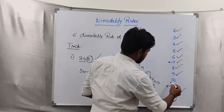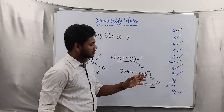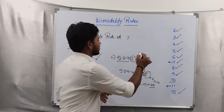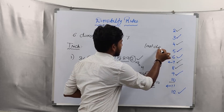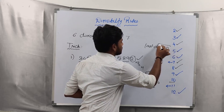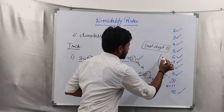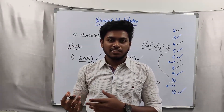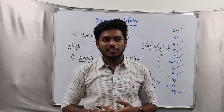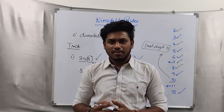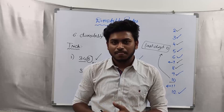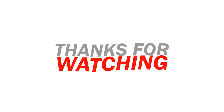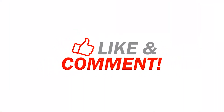Everything is done except divisibility by 10, which is the easiest of all. If the last digit is 0, the entire number is divisible by 10. I hope you all enjoyed this video. Let me know your suggestions in the comment section for the next video. We will try to cover those videos in the next 2 or 3 weeks. Thank you.